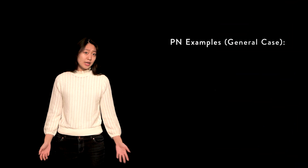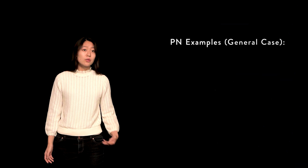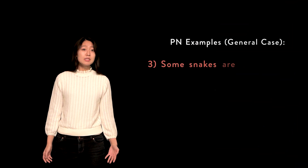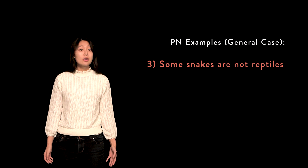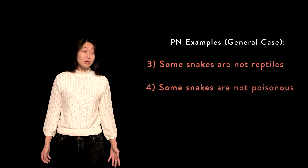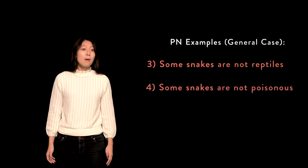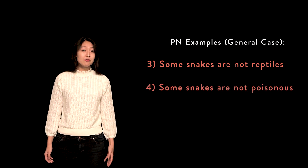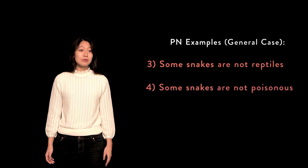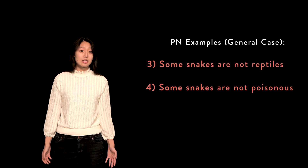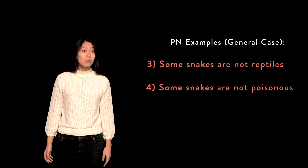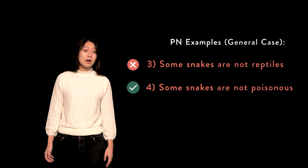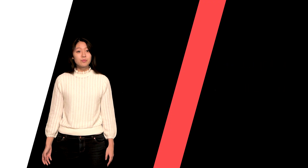Particular negative — general cases. Three: some snakes are not reptiles. Four: some snakes are not poisonous. Propositions three and four are both examples of the particular negative, but once again there is an important distinction. Three is false, whereas four is true.